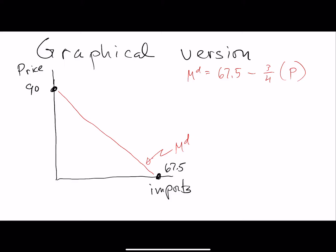If P is zero, it's immediately going to be obvious that the level of imports is 67.5. Kind of a weird example where the price is zero, but that's what it would be. Imports would start whenever the world price is below 90. So the example that we had with 50, this isn't really drawn to scale, is that we would find out that the level of imports is 30.